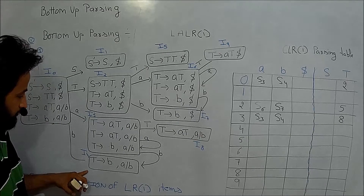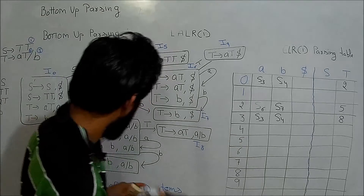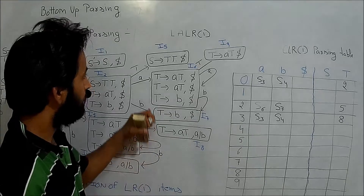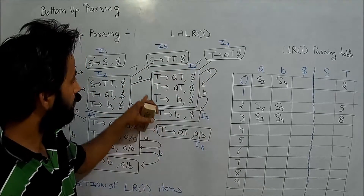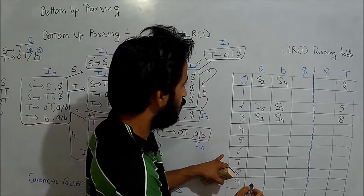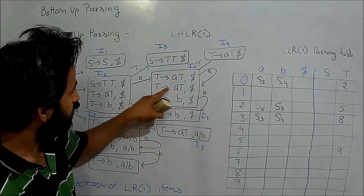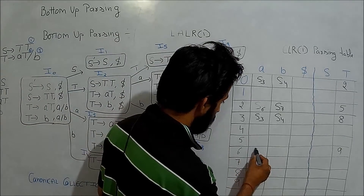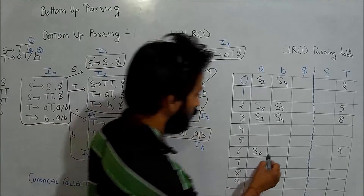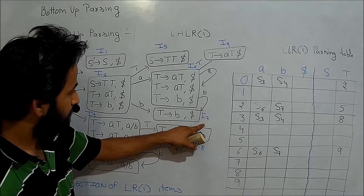State i4 is a final state, so I will mention its reduce move later after completing all non-final items. Similarly i5 is final — I will handle it later. For state i6: taking T goes to state 9, so I write 9 in the goto. Also i6 by taking a will shift to s6, and by taking b will shift to s7.